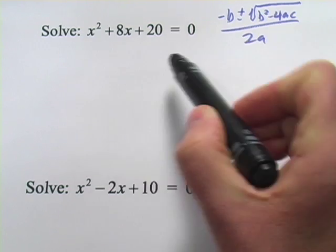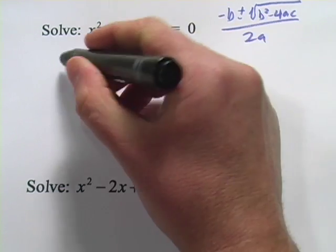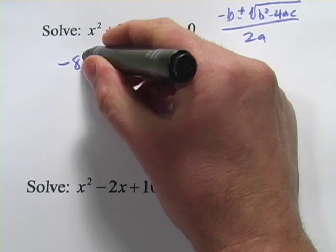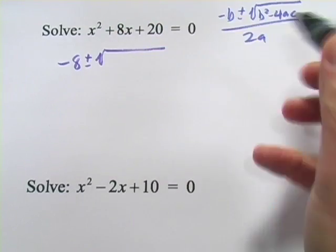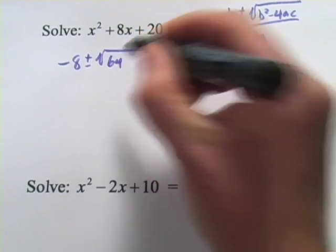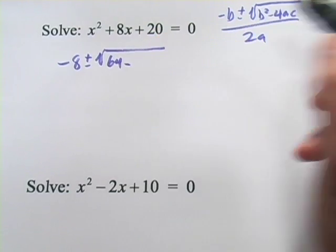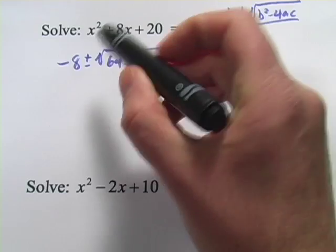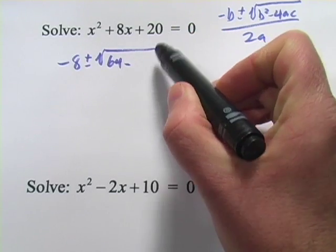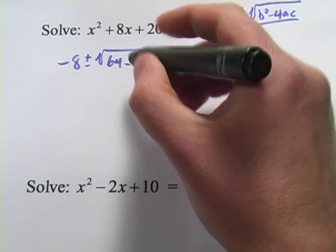So let's take these and start plugging them in. Negative b is going to be negative 8. Then we have plus or minus the square root of 8 squared is 64. That's b squared, 8 squared, minus 4 times a times c. Well, a is 1 and c is 20. So 4 times 1 times 20 is going to be 80.